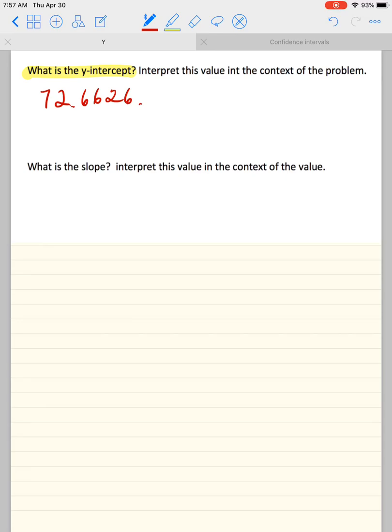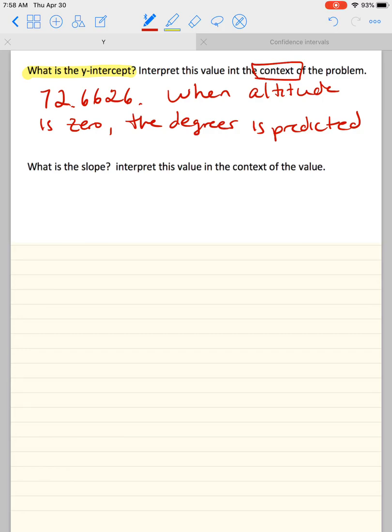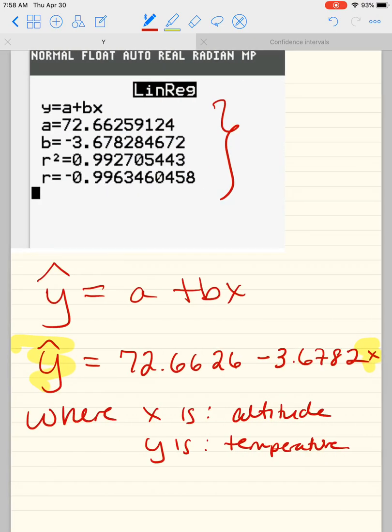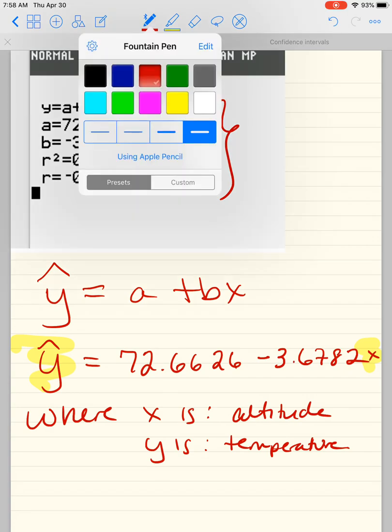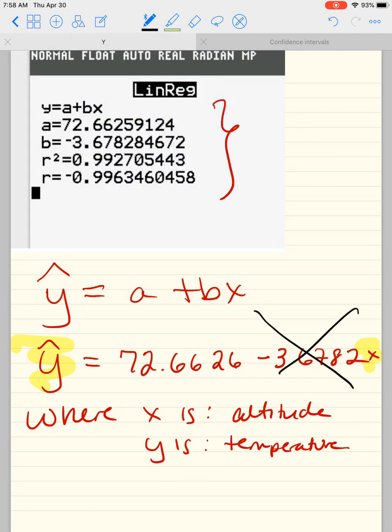You must define your variables, x and y hat only in this case. Now, once I have that, one of the most famous questions is to interpret this data. So 72.6626 is your y-intercept. This question says, what is the y-intercept? So you literally say the y-intercept is 72.66. Interpret this. Well, the y-intercept means that when x equals 0. So what is x? You just replace it with the context. When the altitude is 0, the degrees is predicted, because remember, it's equal to y hat, right? So the degrees is predicted to be 72 or 73.